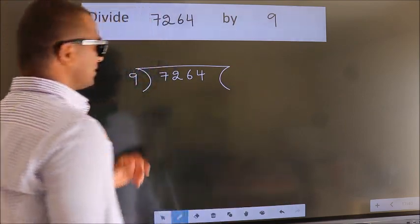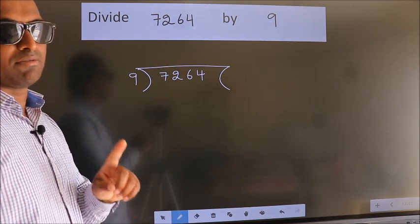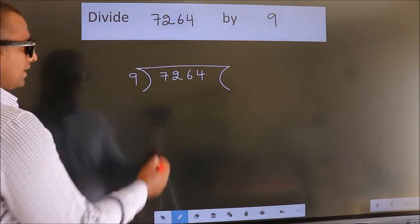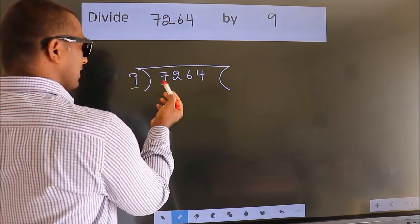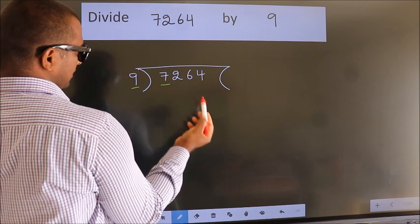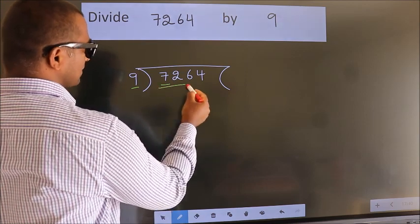This is your step 1. Next, here we have 7, here 9. 7 is smaller than 9, so we should take 2 numbers, 72.